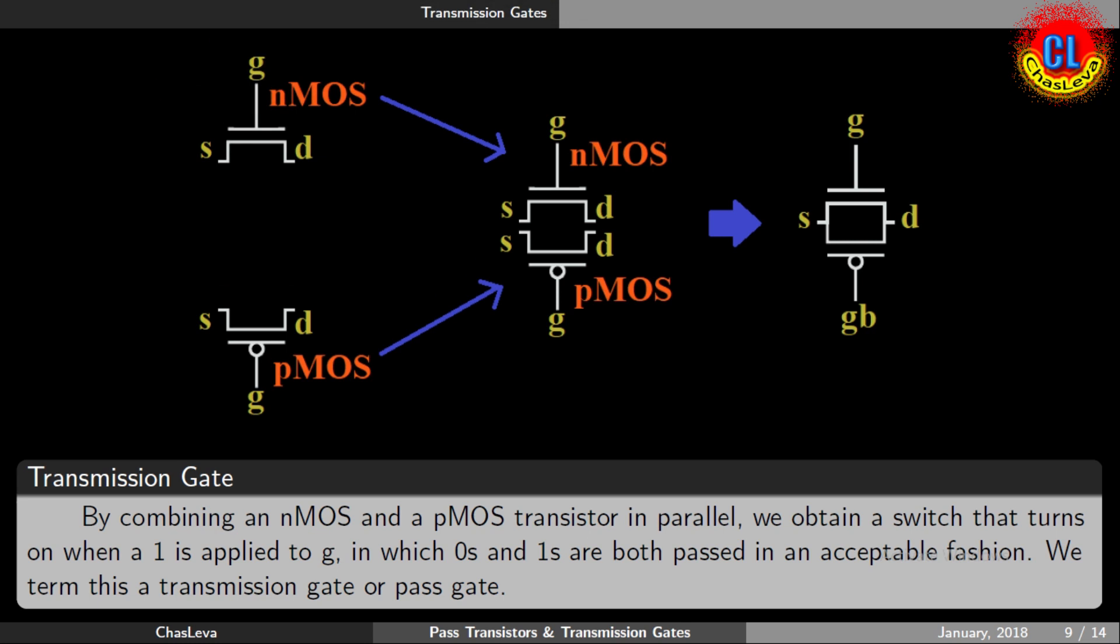We know that NMOS transistor will pass strong 0 and PMOS transistor will pass strong 1. By combining an NMOS and PMOS transistor in parallel, we obtain a switch that turns on when a 1 is applied to G, in which 0s and 1s are both passed in an acceptable fashion. It is termed as transmission gate or pass gate.